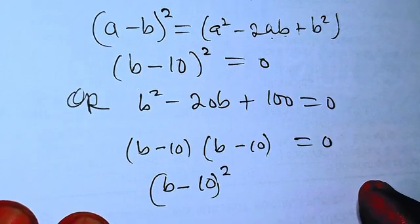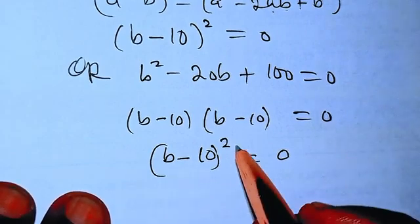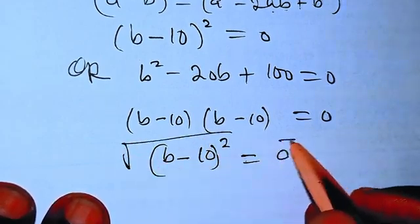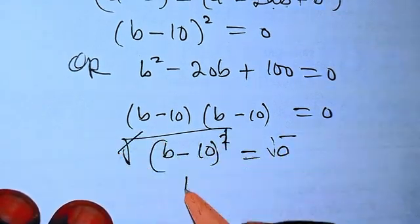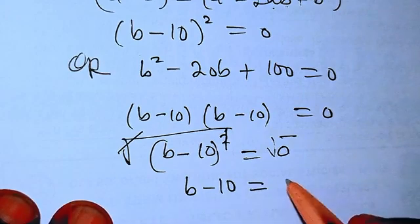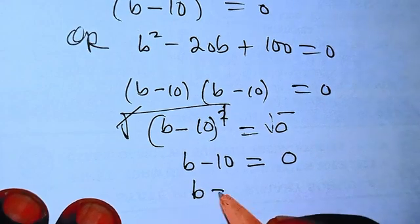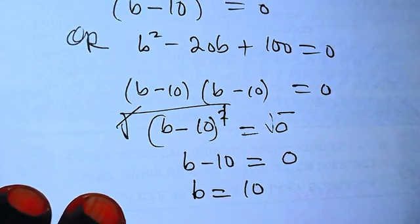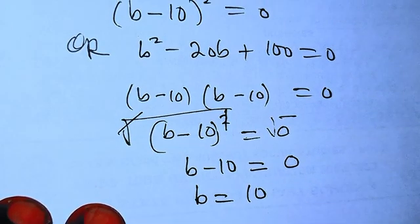So now from here, we can take the square root of both sides. If you take the square root of both sides, you know that this, we cancel this, we have B minus 10 equals 0. So we have B to be equals 10. So if B equals 10, we are looking for A, not B.